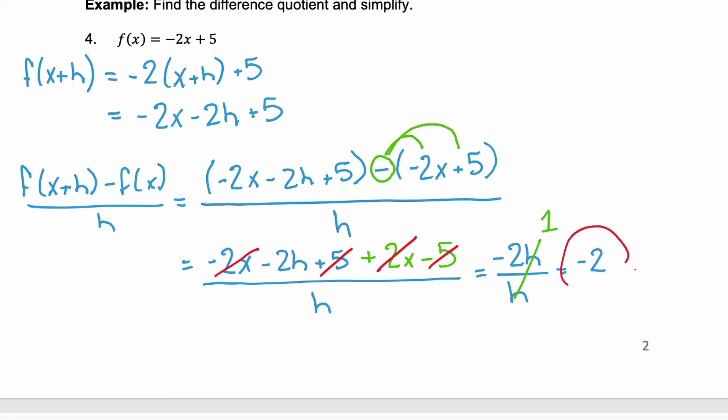Now this negative 2 is the difference quotient for our given function. But sometimes you can have a difference quotient that is still a polynomial. So you could end up with a difference quotient like x squared plus 2xh plus h squared. They won't always be constant. Sometimes it'll still be a polynomial.